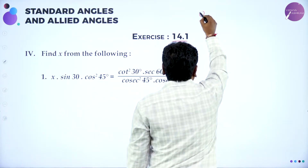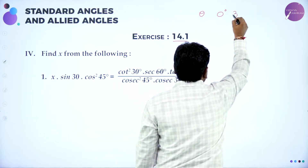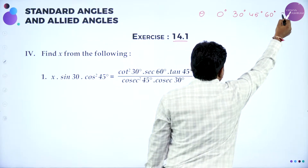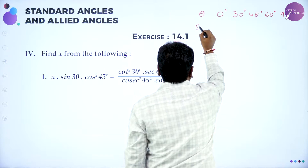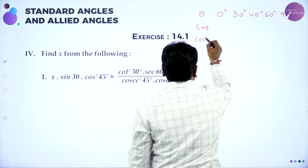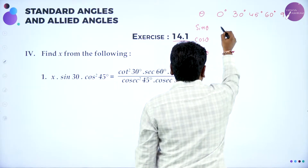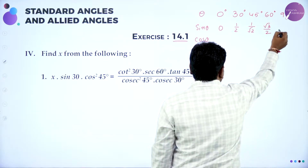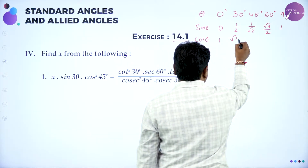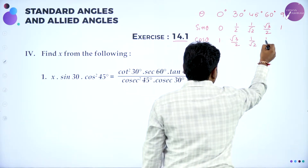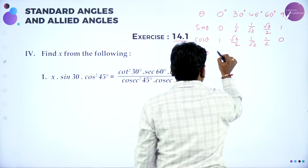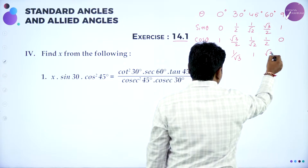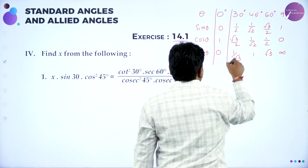What is the standard angle table? Theta takes values 0°, 30°, 45°, 60°, and 90°. Sin 0 = 0, sin 30 = 1/2, sin 45 = 1/√2, sin 60 = √3/2, sin 90 = 1. Cos 0 = 1, cos 30 = √3/2, cos 45 = 1/√2, cos 60 = 1/2, cos 90 = 0. Tan 0 = 0, tan 30 = 1/√3, tan 45 = 1, tan 60 = √3, tan 90 is not defined. This is the table you should know first.